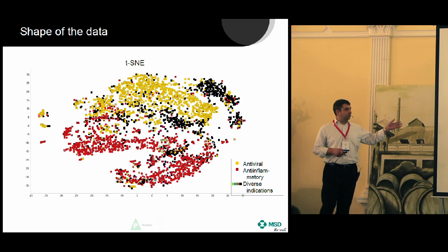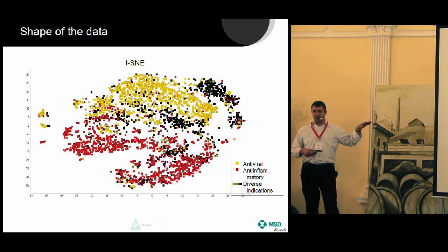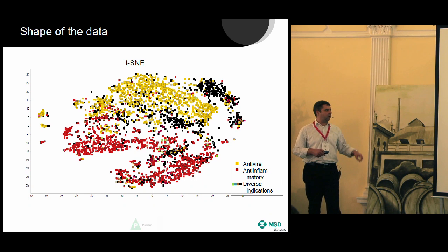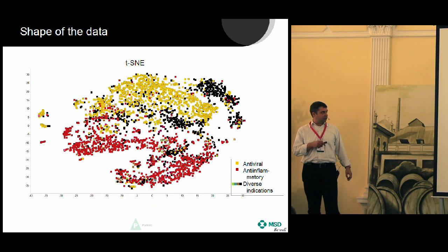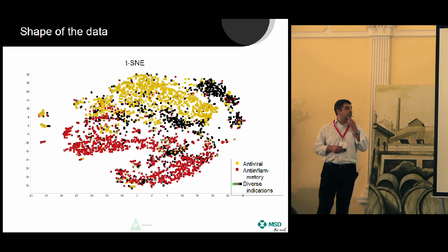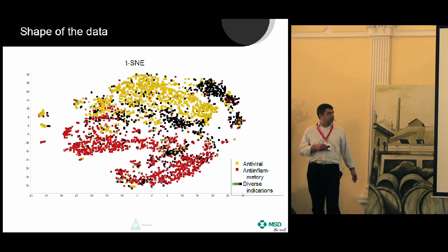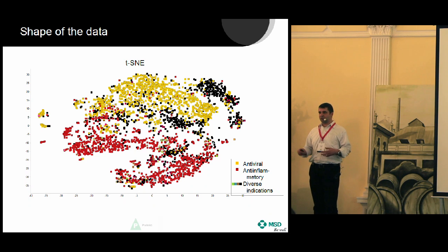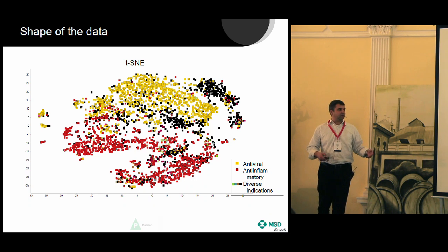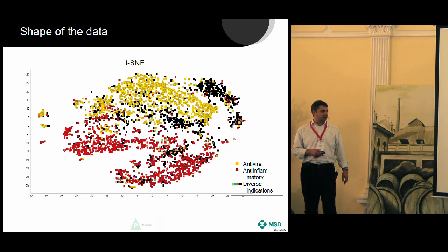We're treating cells with a bunch of different compounds that come from different classes and different projects. The compounds in yellow are from an antiviral program, the compounds in red are from an anti-inflammatory program, and black is the third most populous group from a diversity set. You can see that the colors segregate — yellow separates from red and largely from black. This is because compounds with different effects on the cell elicit different gene expression responses, so the cell looks different when you take its pulse using these 1,000 genes.